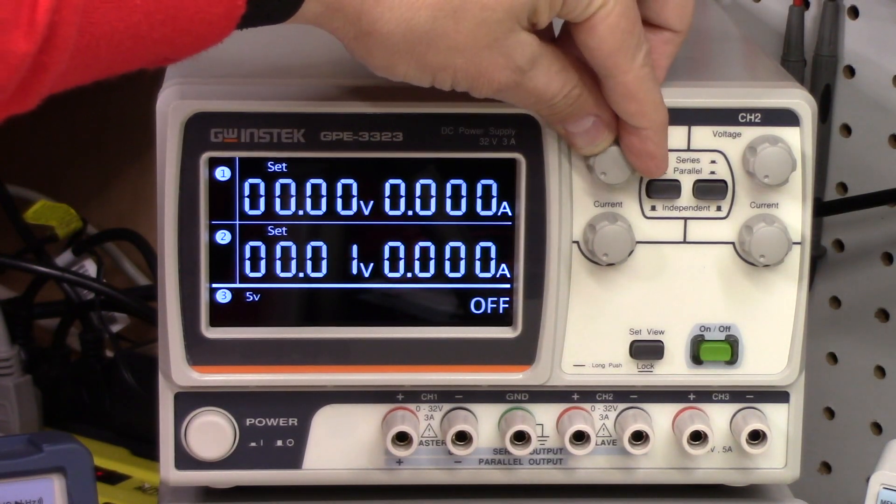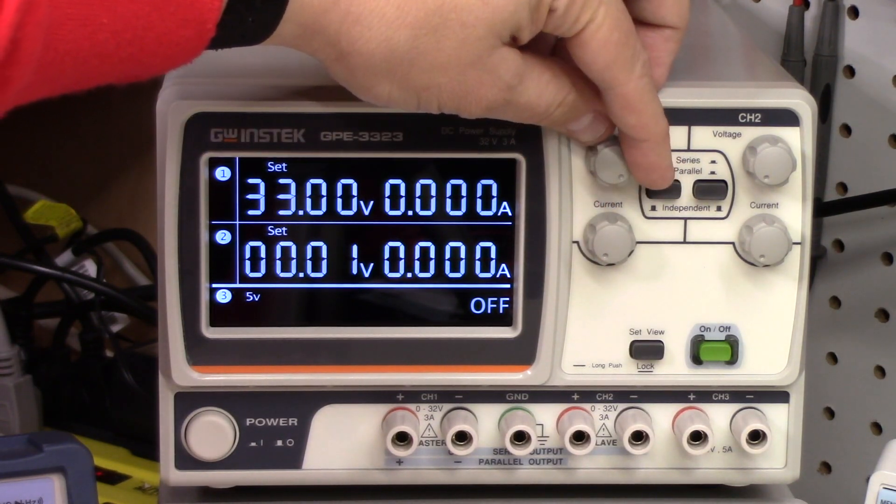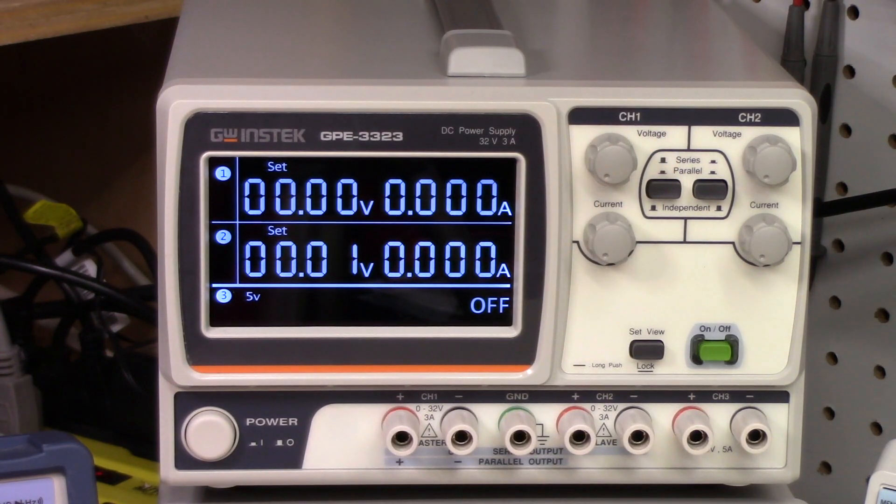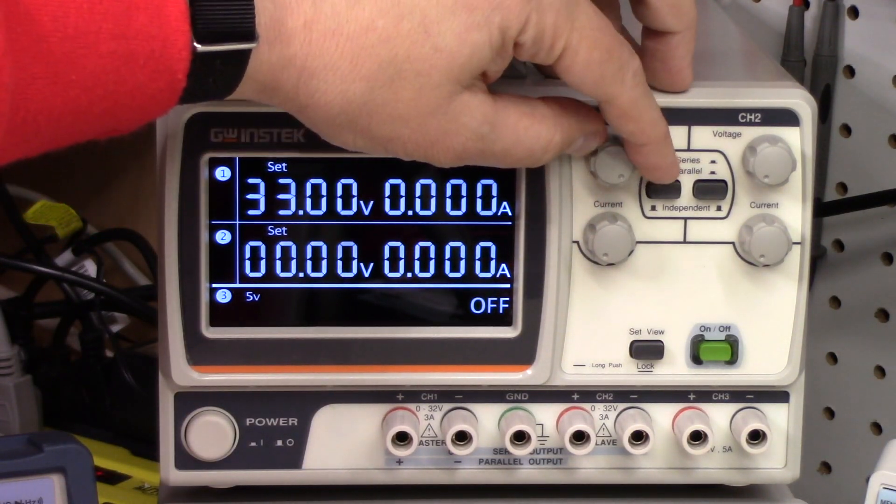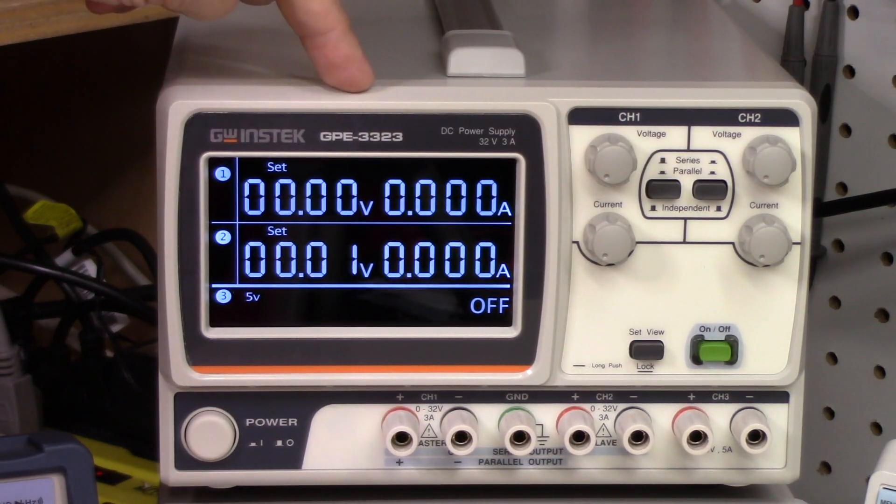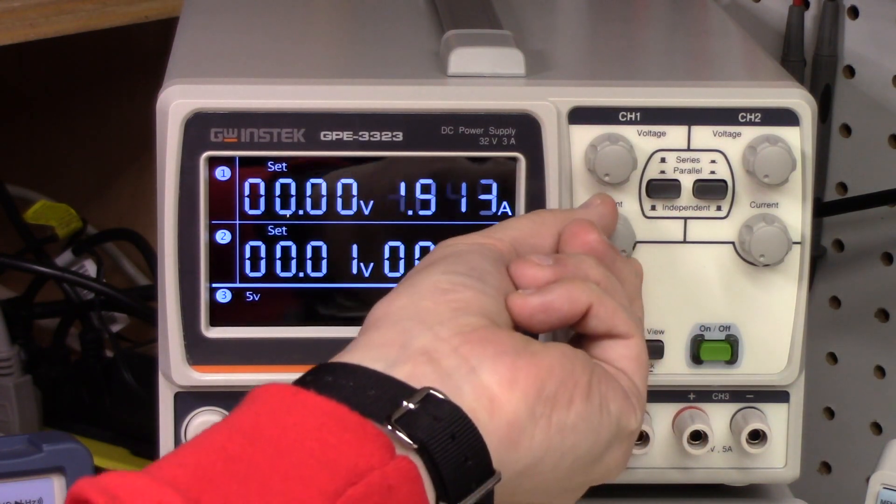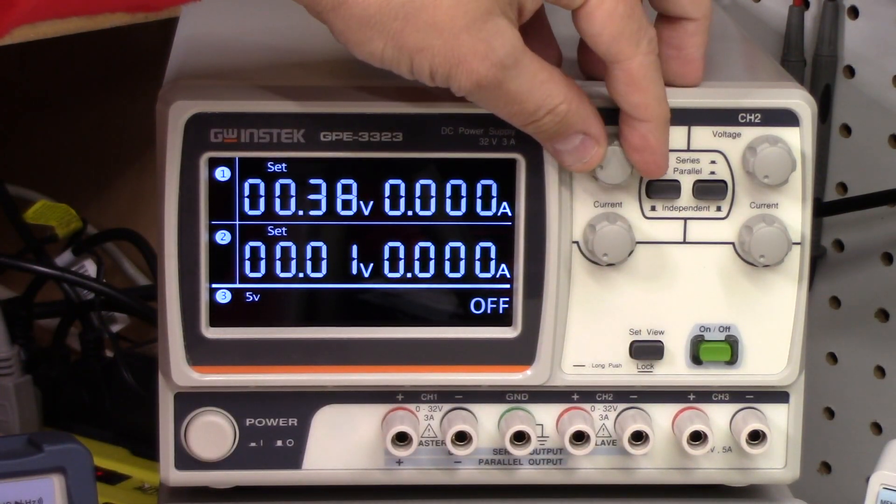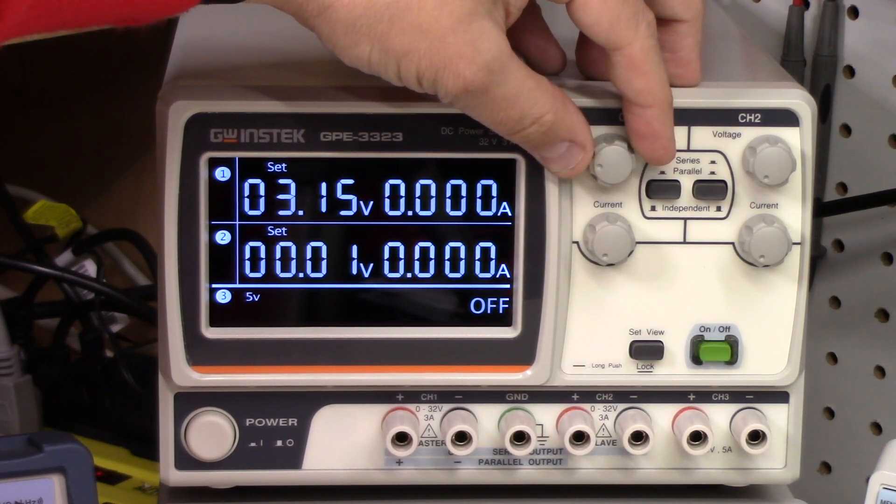The controls here are potentiometers. They have a minimum and a maximum, as opposed to encoders, as you might find on some other modern power supplies. And they're not multi-turn pots. There's not even one revolution to sweep through the entire range of voltage. And it's the same for current. But that said, it goes fast, but it's not impossible to adjust it precisely.